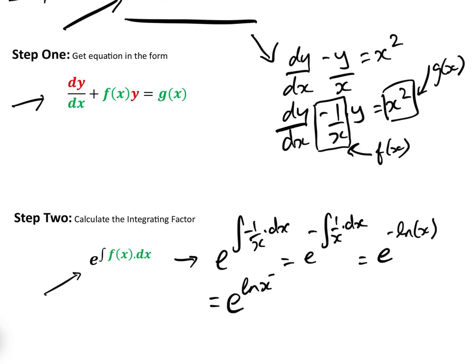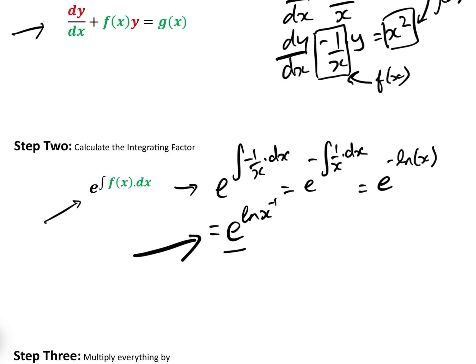which equals e to the log x minus 1. And this we will find all the time, is that we end up with e to the power of log of something. Well, e to the power of log of something is simply that something,